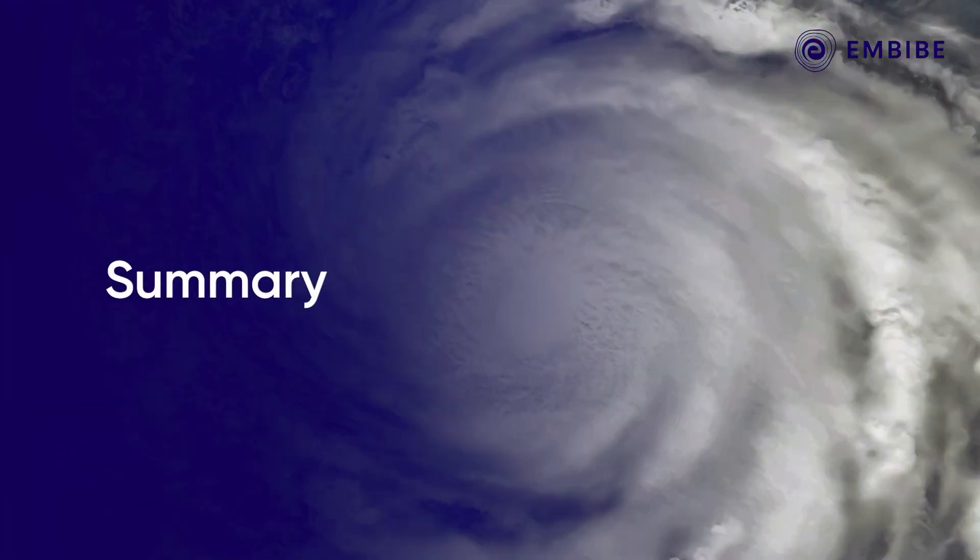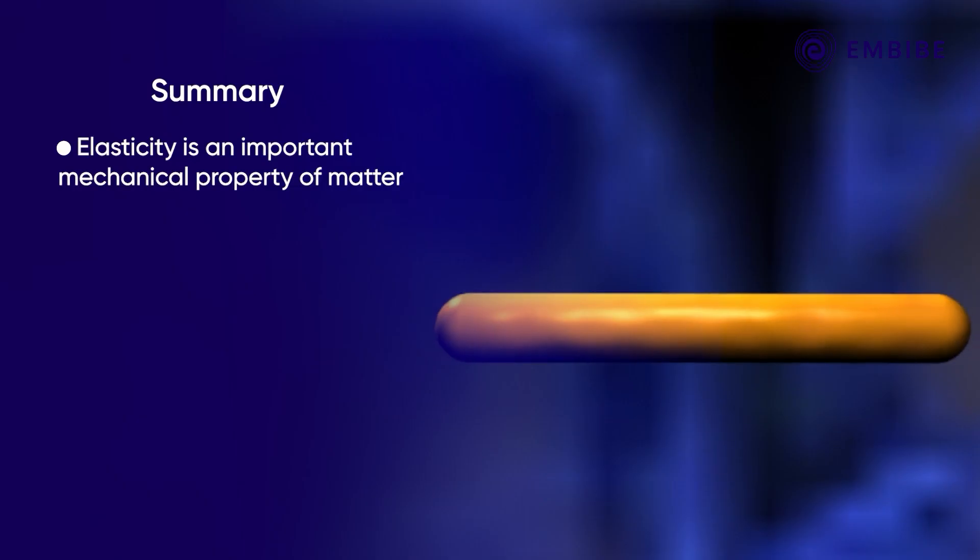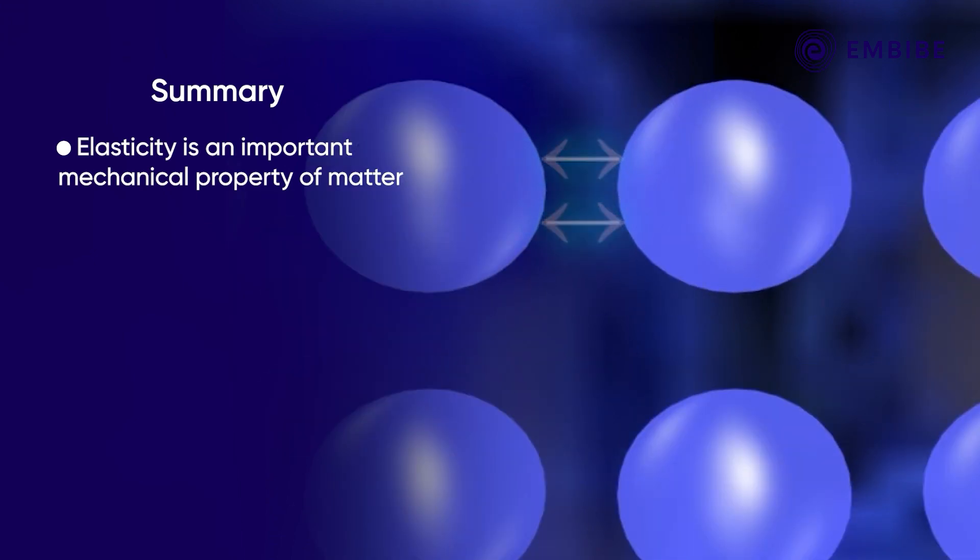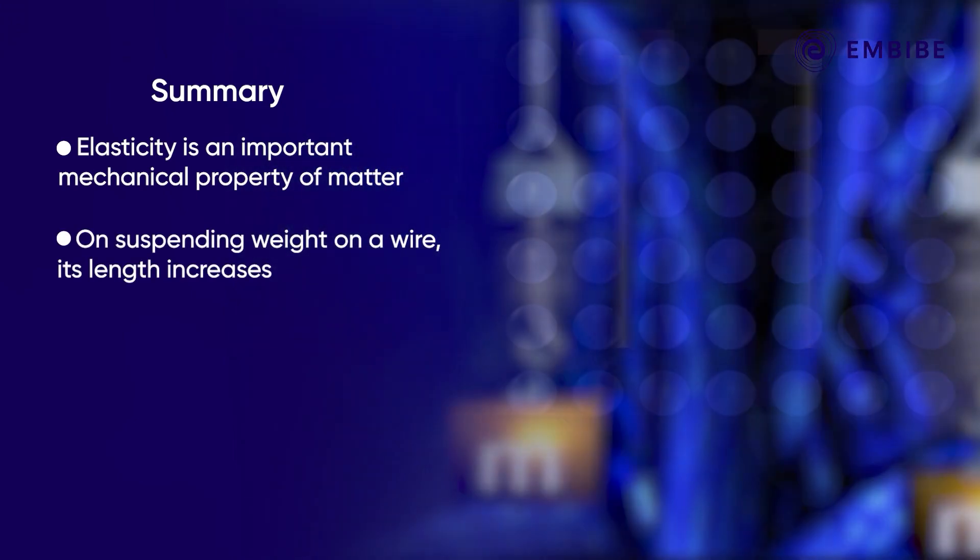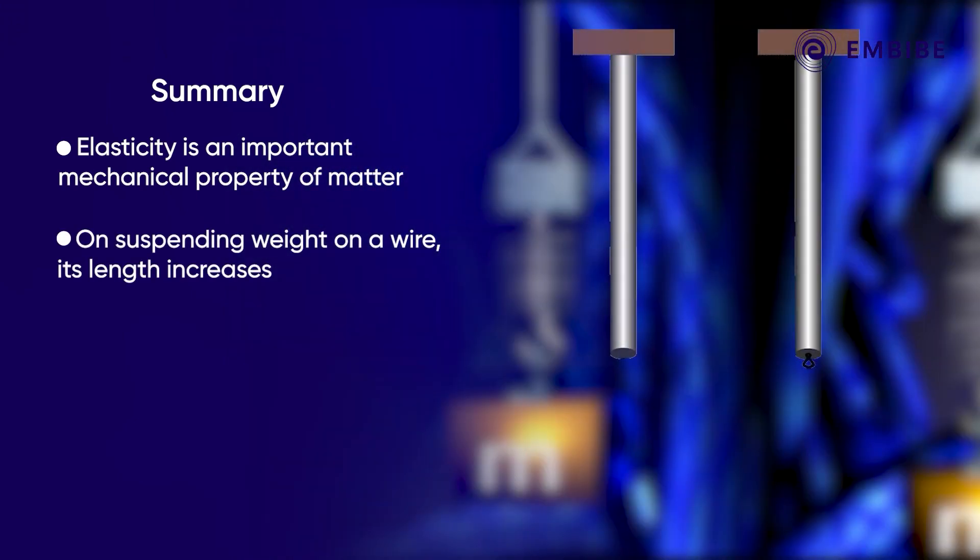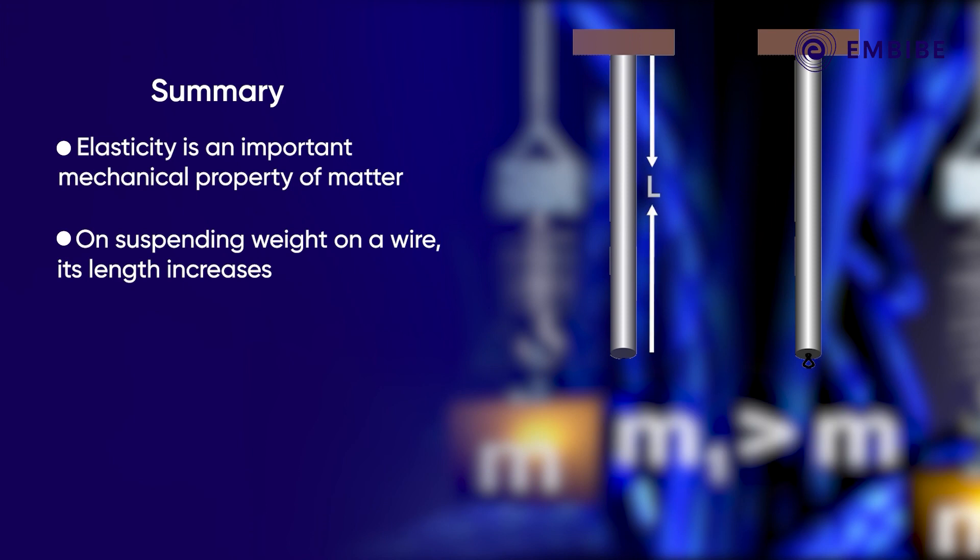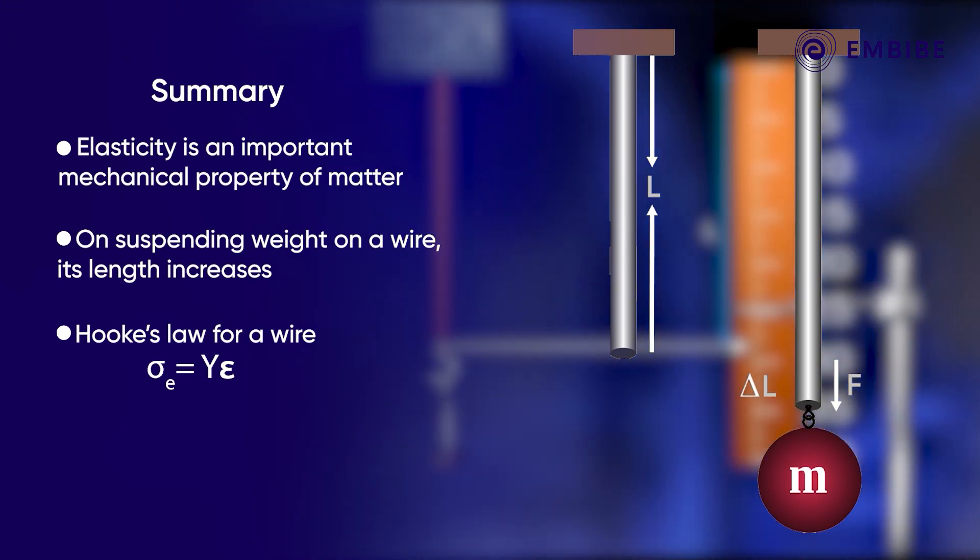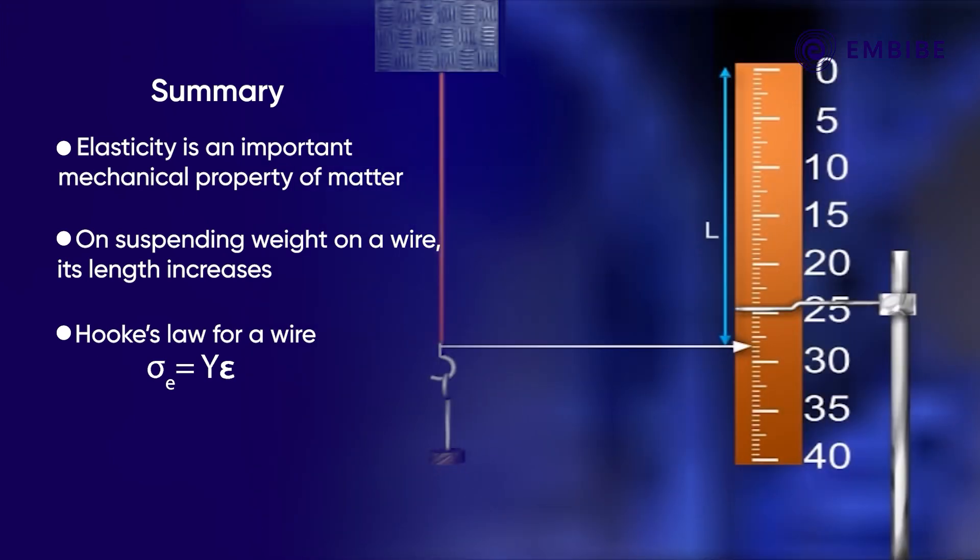Let us summarize what we have learned. We understood that elasticity is an important mechanical property of matter. We saw that by suspending weights on a wire which is fixed at the other end, its length gets increased. We learned about the stress and strain and understood how Young showed Hooke's law in terms of stress and strain.